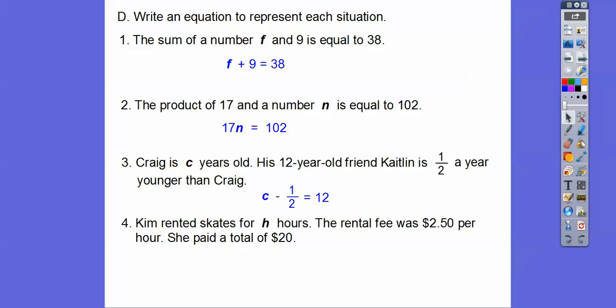Okay, so Kim rents skates for H hours. The rental fee was $2.50 per hour. Now per typically means multiply in math. So what we're going to do is if she does it for $2.50 per hour, and she does it for H hours, then it's going to be 2.5 H. 2.50 H, but 2.50 is the same as 2.5. So 2.5 H, and that equals how much she paid altogether.